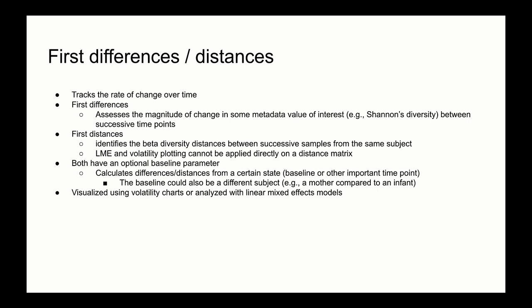Both also have an optional baseline parameter, so that each successive interval will track differences in some metric or calculate distance from a baseline. The baseline could be prior to applying some type of treatment, or it could be a different subject or reference set of samples. This could be useful in several microbiome experimental contexts, for example, in comparing between fermentations and their inocula, or between intact and disturbed environments during recovery from disturbance.